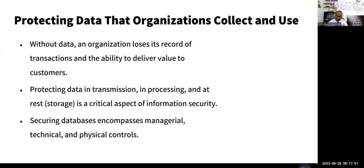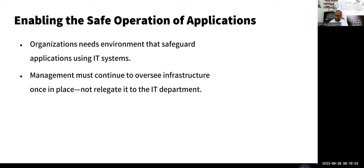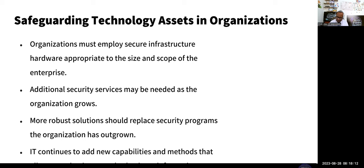We have three types of controls: managerial, also known as administrative; technical, also known as logical; and physical controls. Managerial controls include things like your acceptable use policy. Technical controls include configuring your firewall. Physical controls include things like man traps, turnstiles, and security guards. Your job in information security as an analyst or specialist is to protect the technology assets of the organization, because IT is supposed to add value, not detract it.